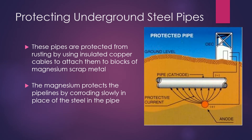This one is about protecting underground steel pipes. These pipes are protected from rusting by using insulated copper cables to attach them to blocks of magnesium scrap metal. The magnesium protects the pipes by corroding slowly in place of the steel. As you can see from this diagram, the pipes are underground at the cathode and magnesium is used as the anode, so the magnesium corrodes in place of the pipes.